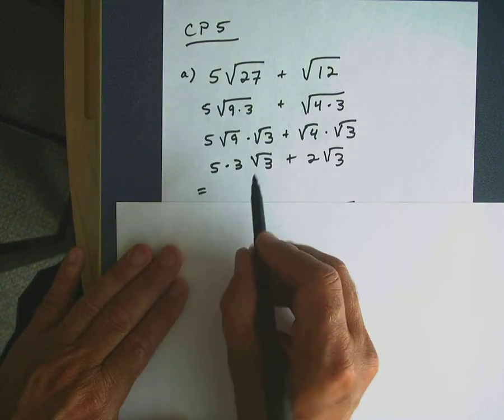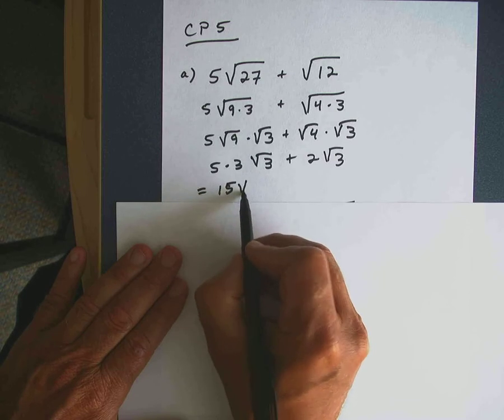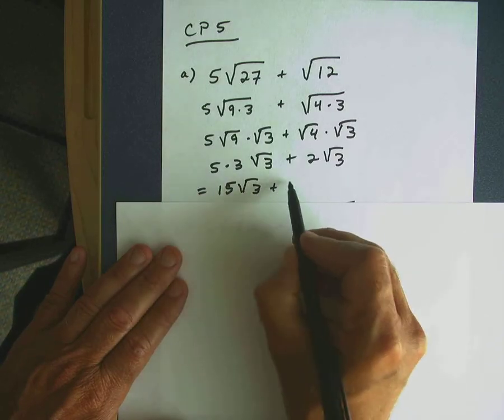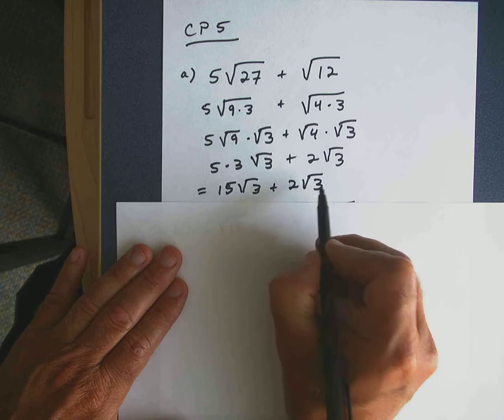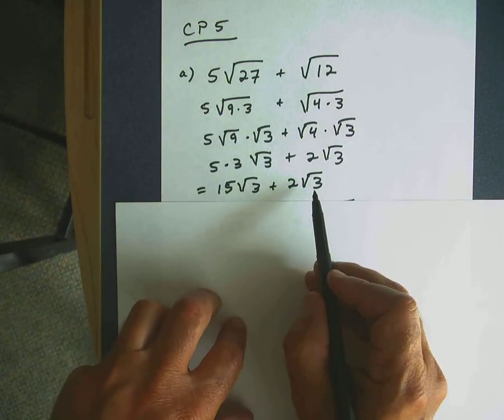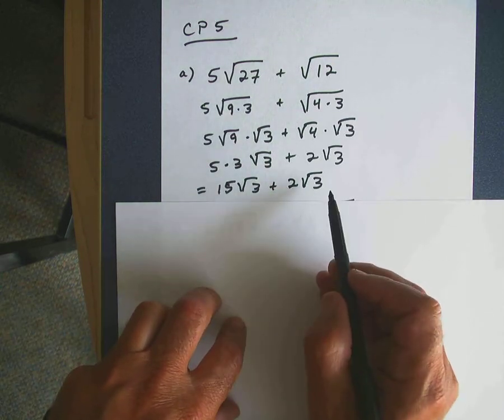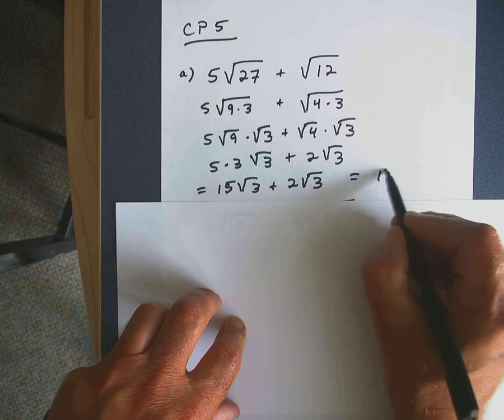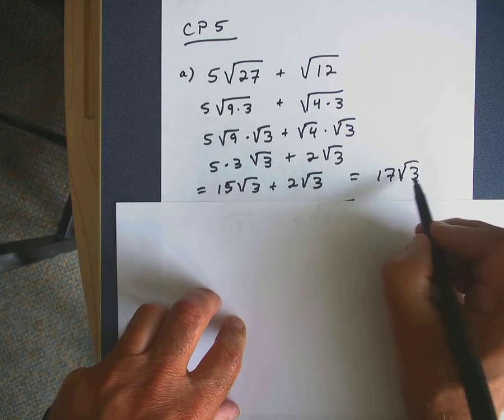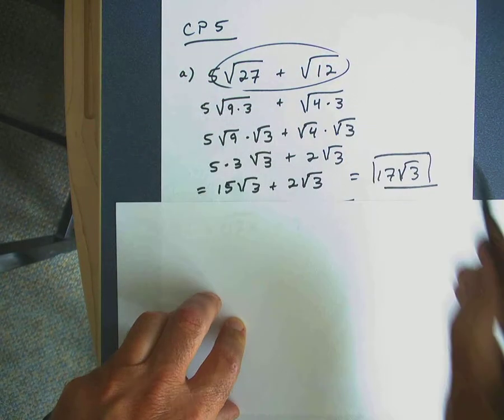Then, if I multiply this out, I have 5 times 3 is 15. 15 times the square root of 3. And then plus 2 times the square root of 3. And similar to what we saw in the last checkpoint, these are like terms. Using the distributive property, we can combine them. 15 plus 2 in parentheses times the square root of 3 will give us 17 times the square root of 3. So we're able to simplify this expression, the original expression, quite a bit.